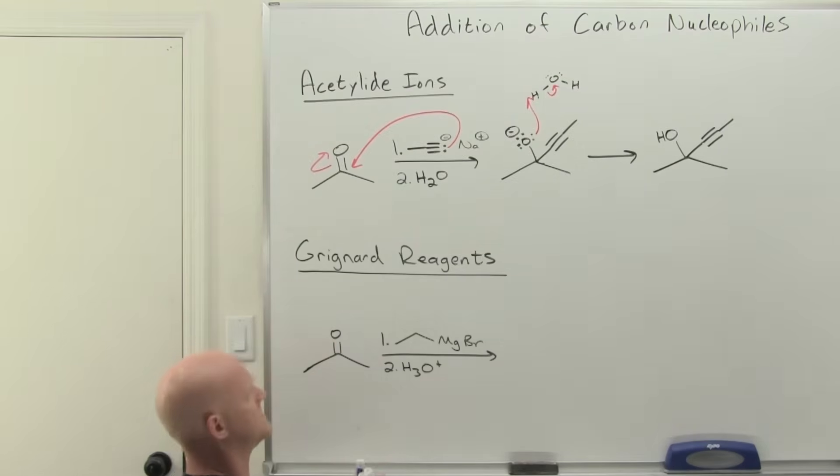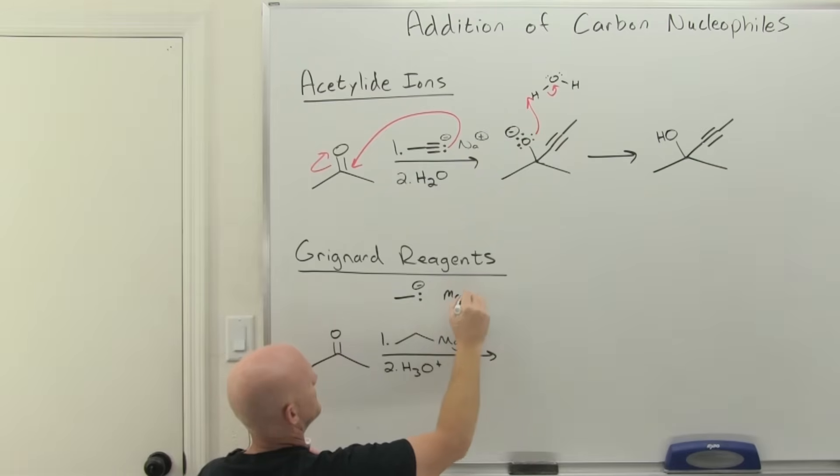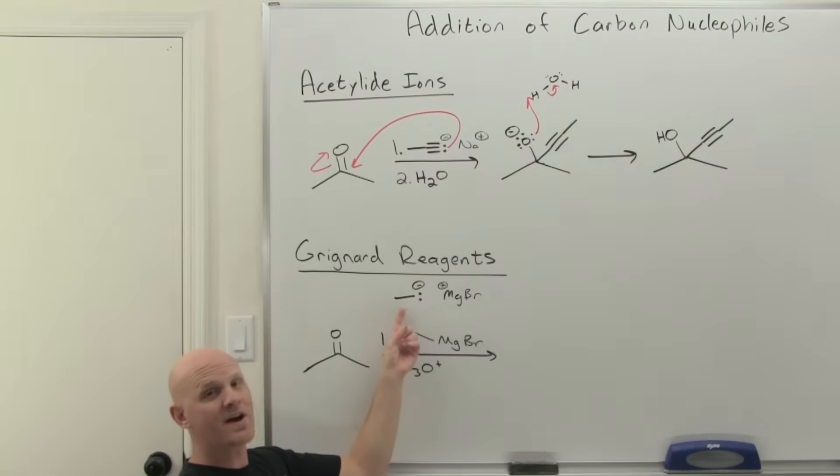So in this case, you learned that for a Grignard reagent, you want to treat that as if it's ionic, at least in your head. It's not 100% ionic. It's only like 52% ionic, but you want to treat it as being ionic here so that you can envision that carbanion nucleophile that this is the equivalent of. So again, just like we saw in the last lesson that the hydride reagents were the equivalent of having a hydride ion, a Grignard reagent is the equivalent of having a carbanion.